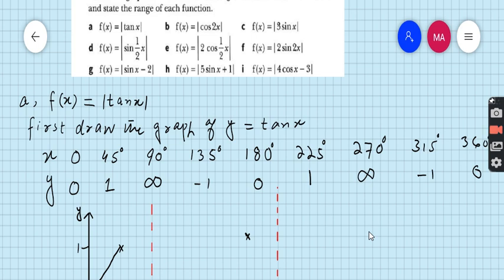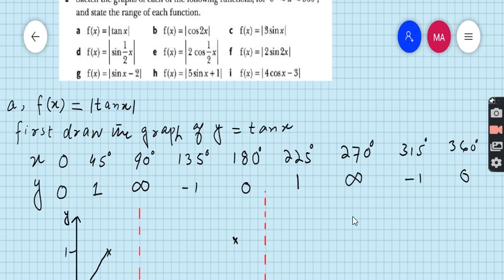So take the interval of 45 degrees on the x-axis. So first value is 0 degrees, then 45, then 90, then 135, then 180, then 225, then 270 degrees, then 315, then 360 degrees. And with the help of the calculator, find the values: tan 0 degrees is 0, tan 45 is 1, tan 90 is undefined or infinity, 135 degrees is minus 1, 180 degrees is 0, then 225 is 1, tan 270 is undefined, tan 315 is minus 1, and tan 360 degrees is 0.